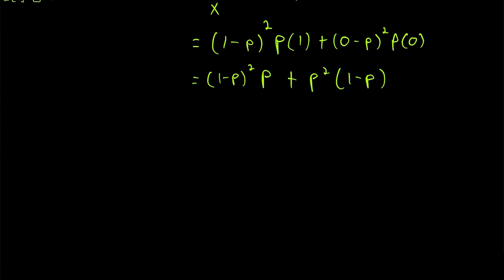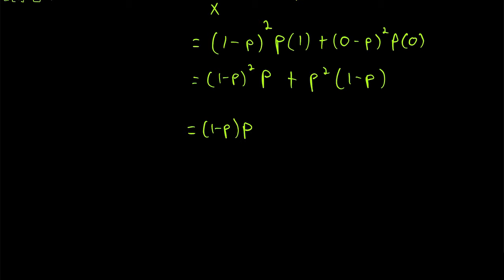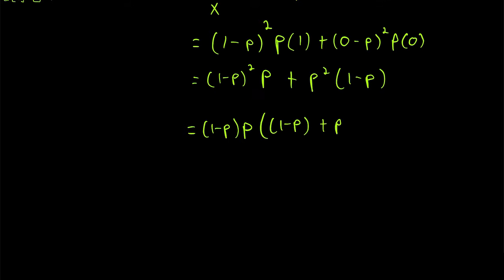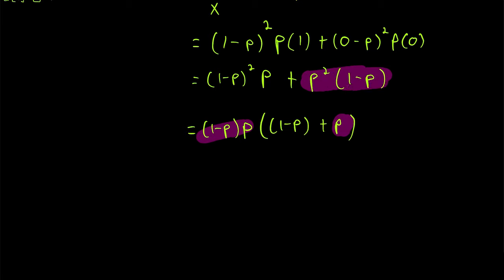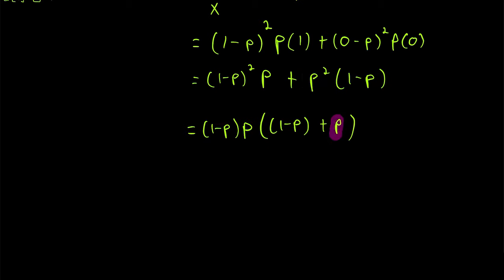We can do a little factoring. Each term has a factor of (1 minus p) times p, so we factor that out of the sum. That leaves (1 minus p) in the first term and p in the second term. Multiplying out confirms: (1 minus p) · p · (1 minus p) gives the first term, and (1 minus p) · p · p gives the second term. Then (1 minus p) plus p equals 1, so the expression simplifies to (1 minus p) times p times 1.